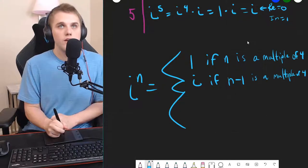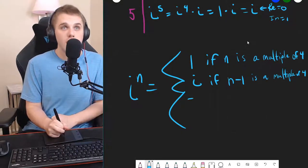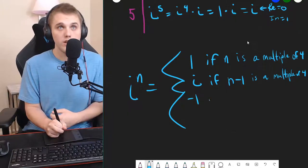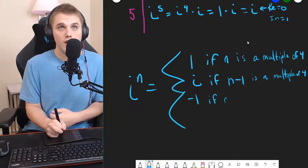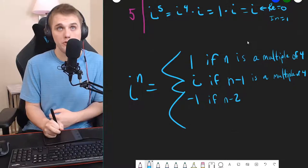And then up next, we have negative 1, because i squared is negative 1. If n minus 2 is a multiple of 4.